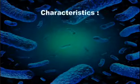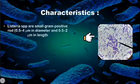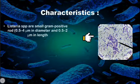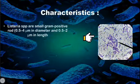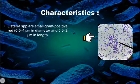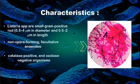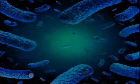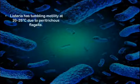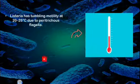Characteristics of Listeria: they are small gram-positive, rod-shaped, 0.5 to 4 micrometers in diameter and 0.5 to 2 micrometers in length. They are non-spore forming facultative anaerobes, catalase test positive, and oxidase test negative. They exhibit tumbling motility — a random twist in movement — at 20 to 25 degrees centigrade.